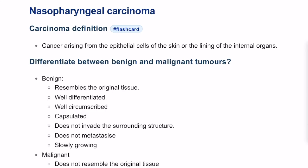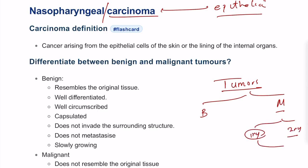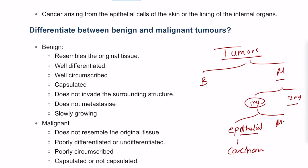Nasopharyngeal carcinoma — to define it, we break it into two pieces. A carcinoma is a cancer that is epithelial in origin. Tumors can be classified into benign and malignant tumors. Malignant tumors can be further classified into primary and secondary tumors. Primary tumors that are epithelial in origin are called carcinomas — our topic today — while those of mesenchymal or stromal origin are called sarcomas.